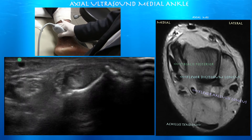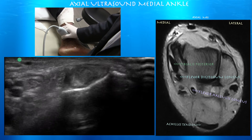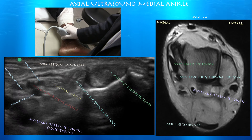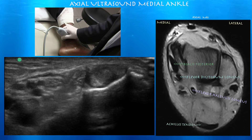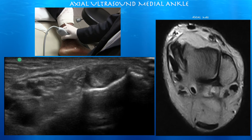You can see here the tibialis posterior tendon is bigger than you would expect. Here are the structures: tibial nerve, flexor retinaculum, and an enlarged tibialis posterior tendon with a tear as well. Sometimes tears in the tibialis posterior tendon can make it look like two separate tendons, so you don't want to get confused and mistake part of the tibialis posterior tendon for the flexor digitorum longus tendon.